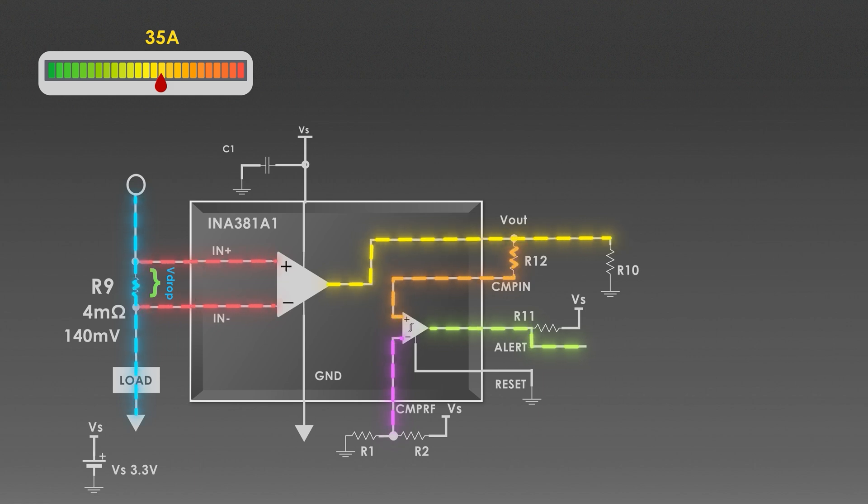For that, we can simply use a voltage divider circuit. We'll put the reference as 2.8 volts at this pin. So, if we calculate the value of R1 and R2 accordingly, where Vs is source voltage of the circuit, which will be around 3.3 volts.